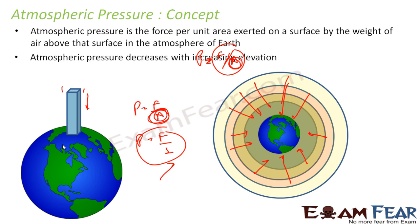Note that atmospheric pressure decreases with increase of height. For example, if you go to a mountain, the pressure exerted at that high point is only by the atmosphere above it, which is less. At a lower point, the pressure is exerted by the whole atmosphere. Since you are at a greater height, the mass of air above that point is less, so pressure is less.